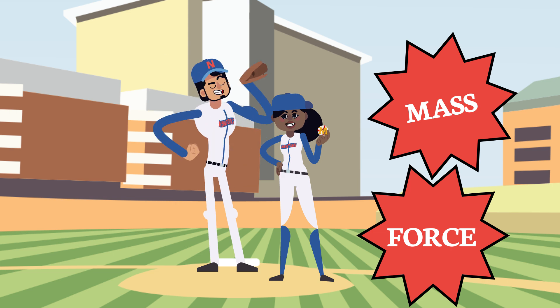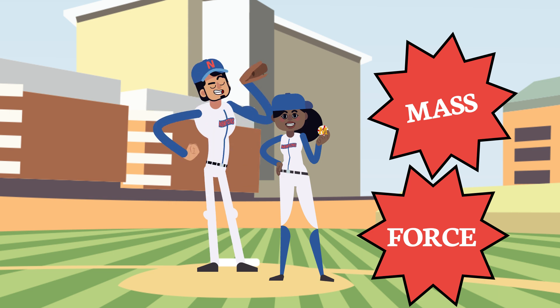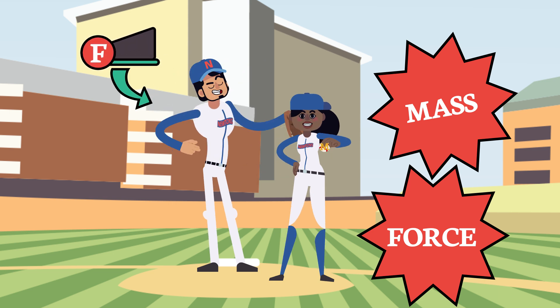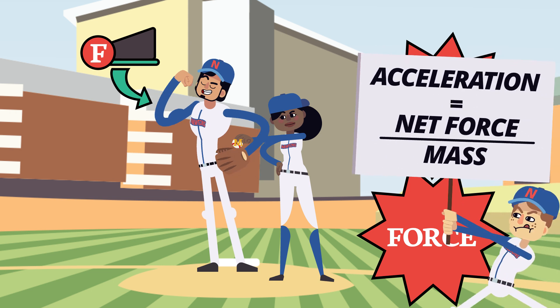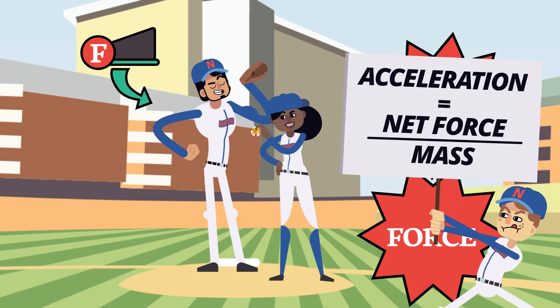We're going to call the net force the pitcher puts on the ball F, and when the ball leaves the pitcher's hand, it moves with A for acceleration.